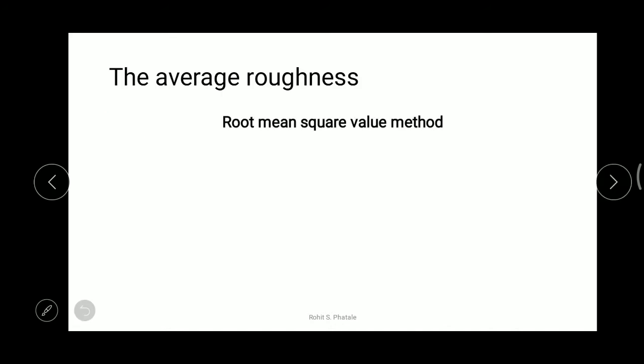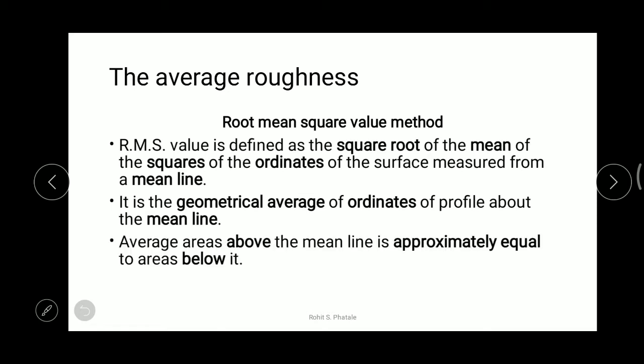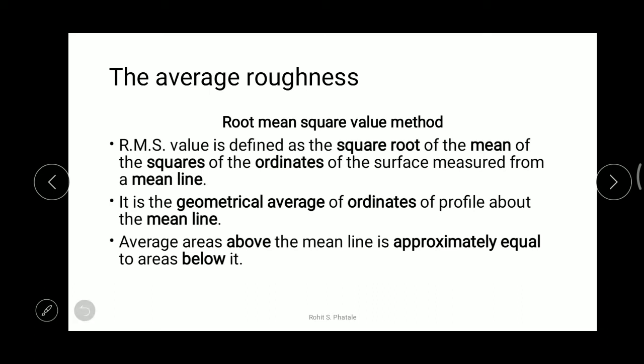Now let us move to the root mean square value method. The RMS value is defined as the square root of the mean value of the squares of the ordinates of the surface measured from the mean line. We take these ordinates — which are heights — square them first, then take the square root.